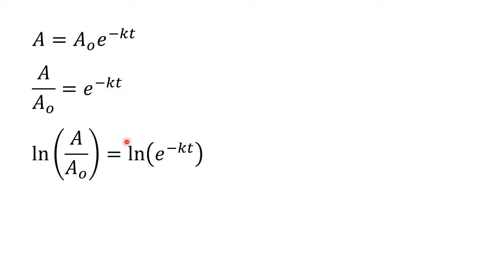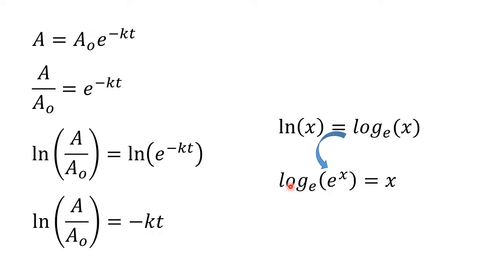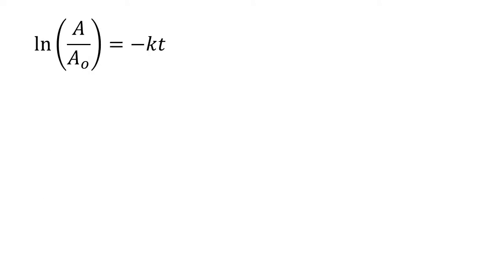We're going to take the natural log of both sides. First a reminder that the natural log of any number is the same thing as saying log base e of that number. Log base e of e to the X, or log base anything times that same thing to the X, is going to equal X. So here I have log base e of e to the X, and that means I can cancel it out. So we've gotten rid of e. The natural log of A over A naught is equal to negative kt, where k is my rate constant.